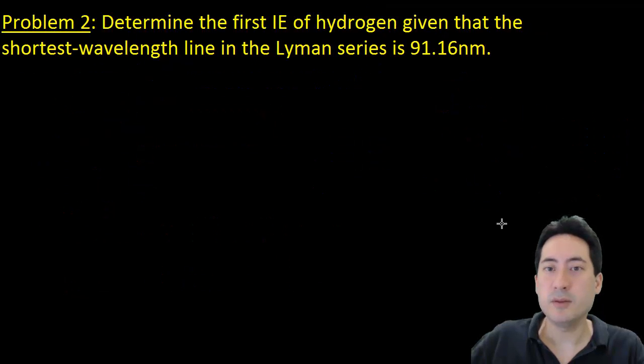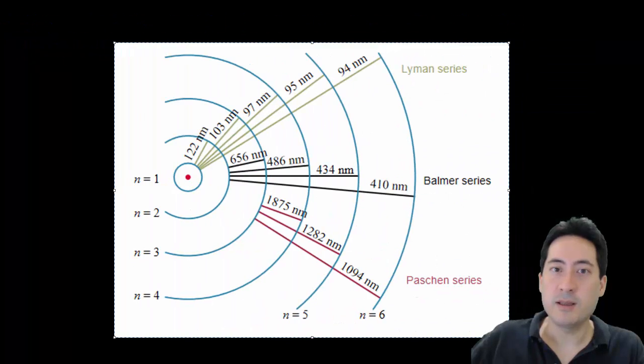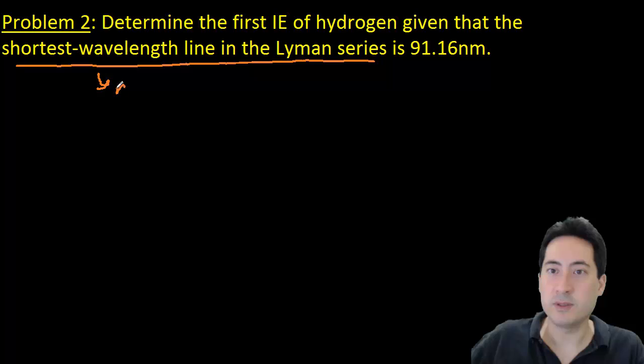Problem two, determine the first ionization energy of hydrogen given that the shortest wavelength line in the Lyman series is 91.16 nanometers. That means that beyond that point is the limit of convergence. So at that point the electron comes off. So that is our ionization energy, our first ionization energy.